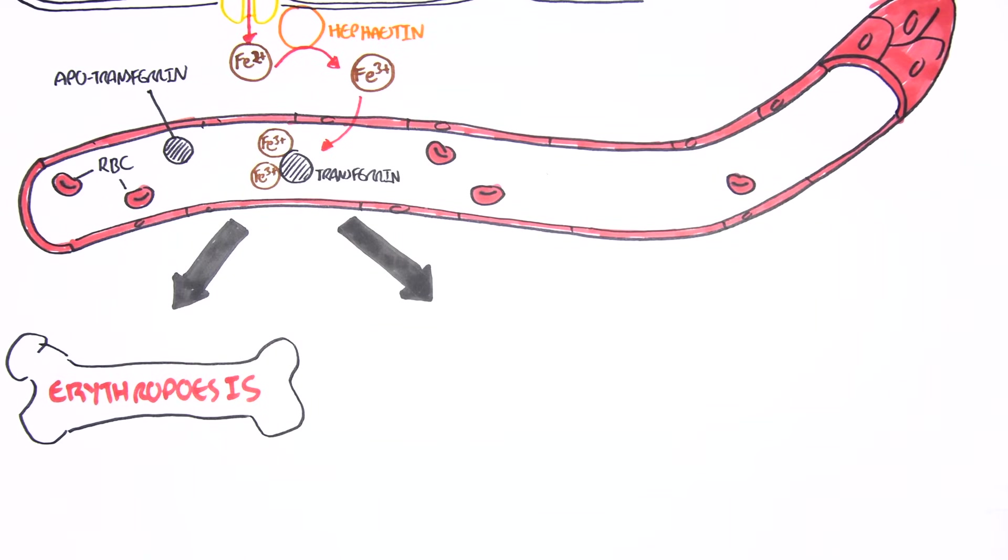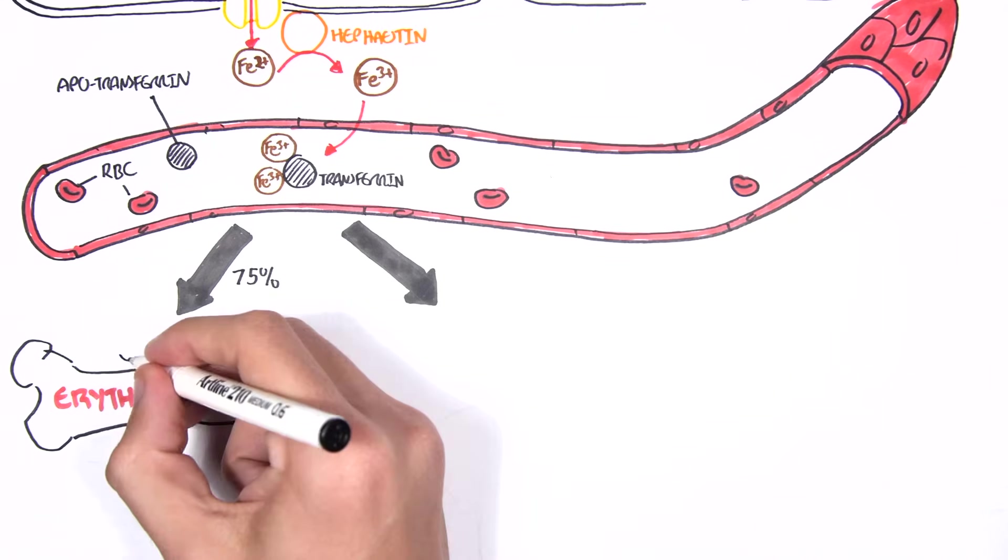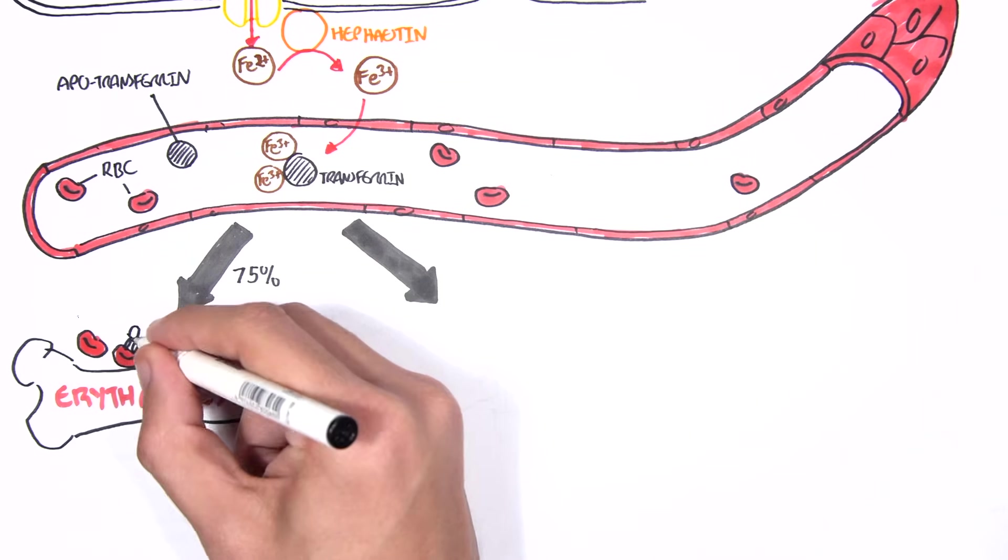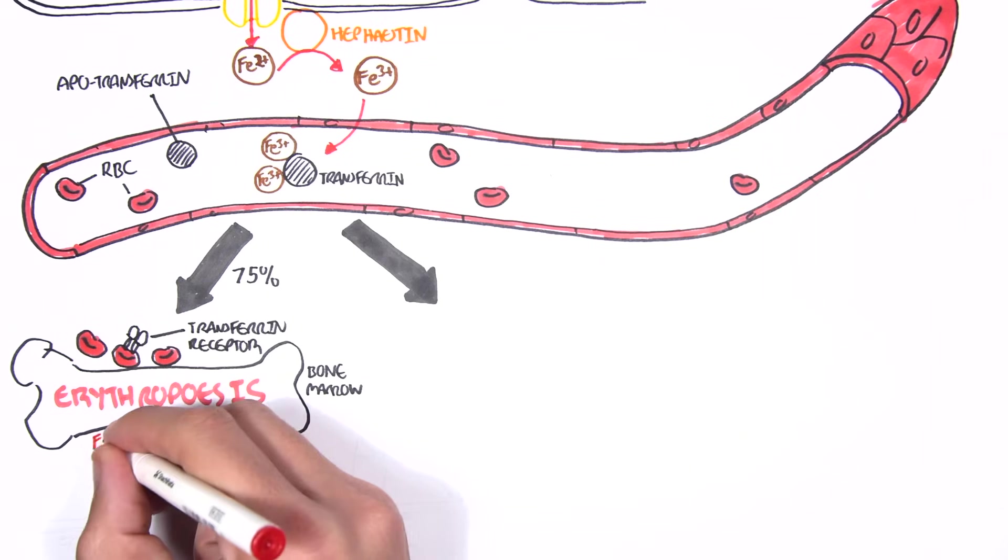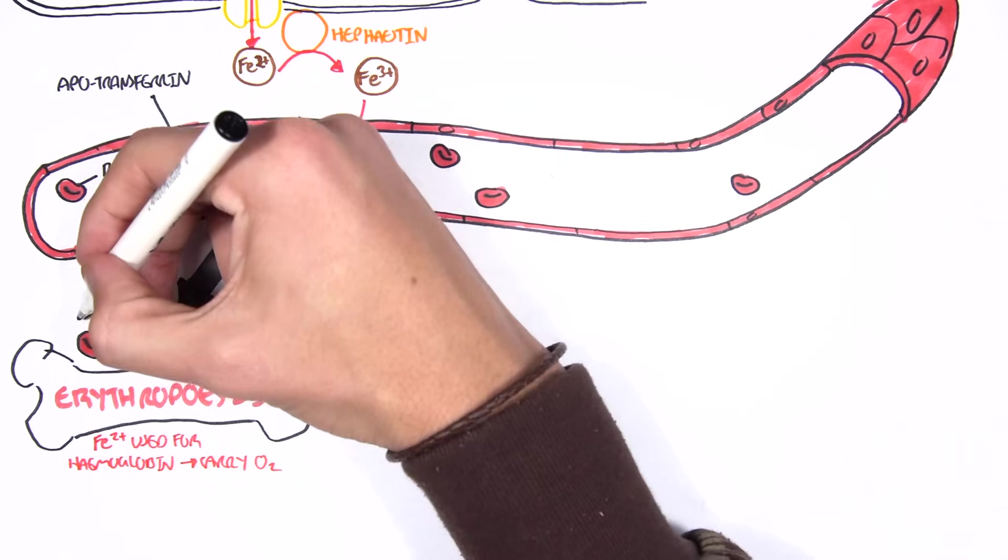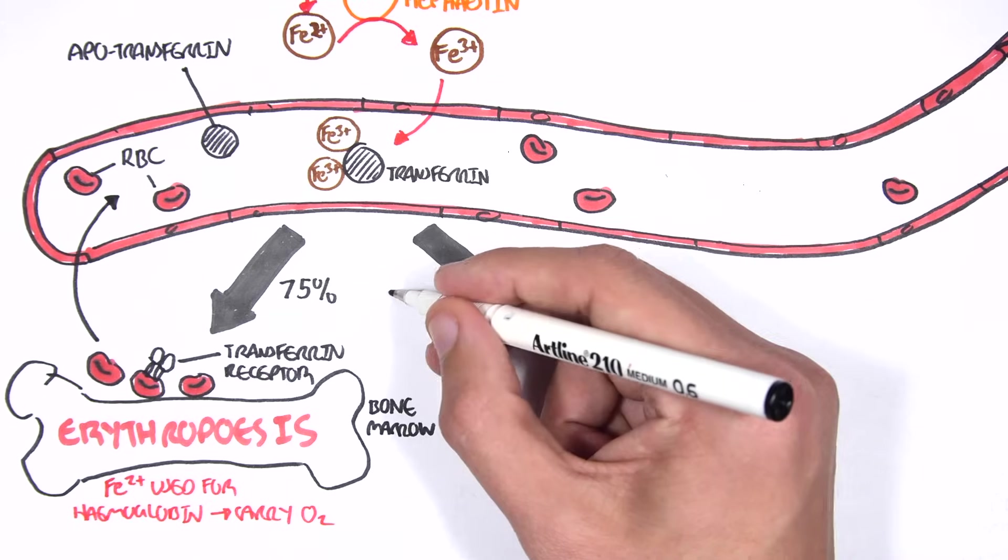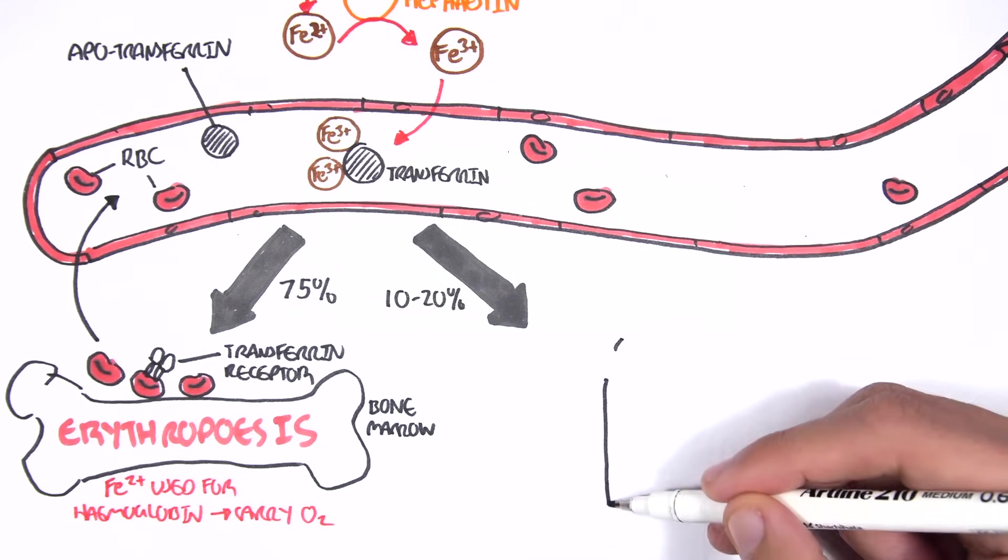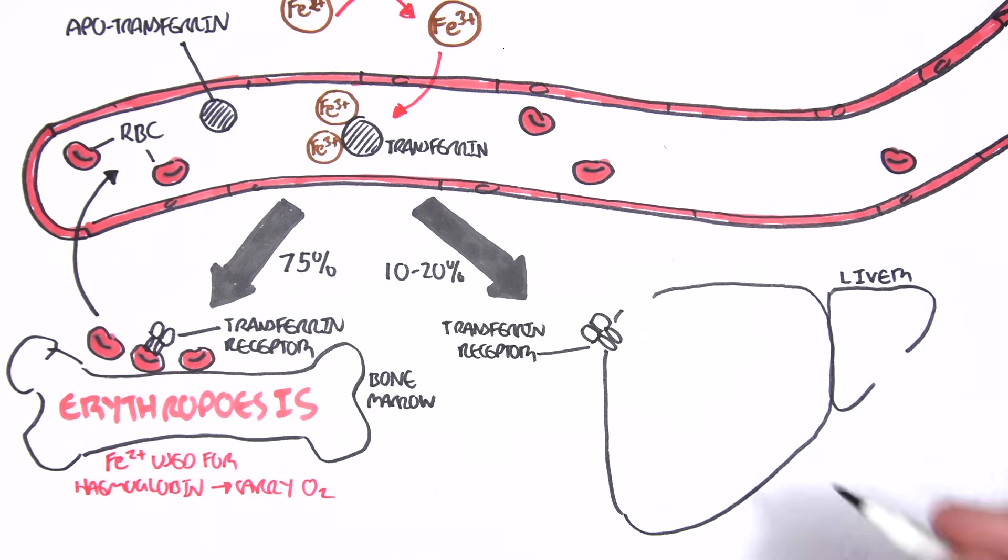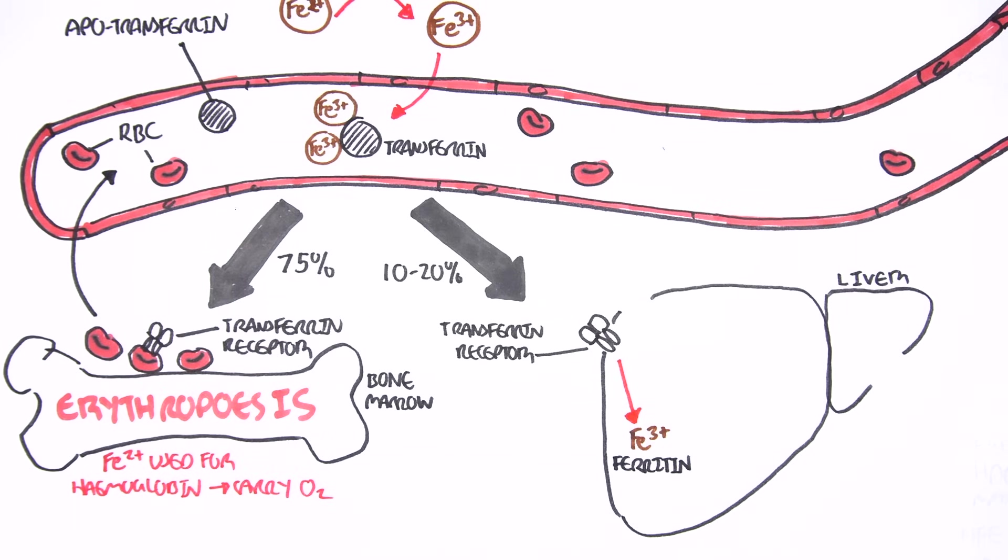Most of these iron goes into erythropoiesis, in the bone marrow, the production of red blood cells. About 75% of the iron absorbed goes into the production of erythrocytes. So, here we have erythrocytes with transferrin receptors. And, why do red blood cells need iron? Well, iron is used for hemoglobin to carry oxygen. And, once iron is used by the pre-red blood cells, the pre-red blood cells can then become mature red blood cells and enter circulation. Transferrin can also transport some of the iron, about 10-20%, to the liver. Transferrin will bind onto the transferrin receptor, which will allow the iron to enter the liver. And then, the liver can then store iron in the ferric form, as ferritin.